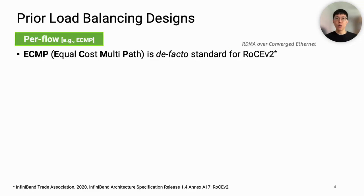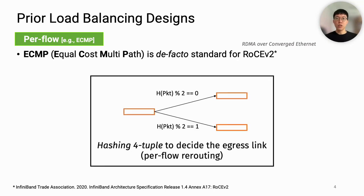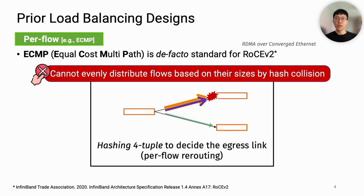First of all, ECMP is the de facto standard mechanism for RDMA in data center networks. ECMP uses hash-based packet forwarding, and thus packets of the same flow always go to the same path. However, it does not evenly distribute flows based on their flow size due to hash collisions.